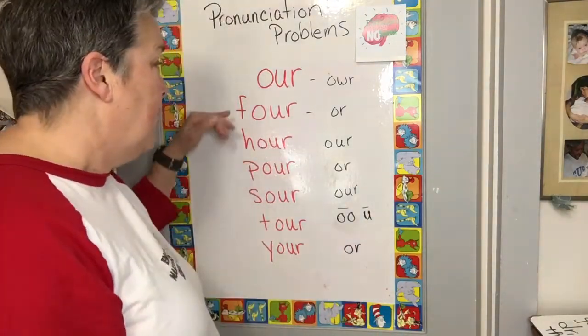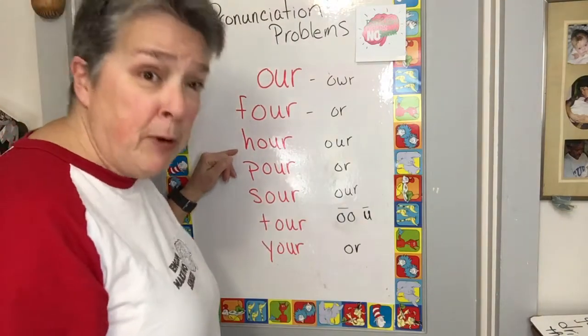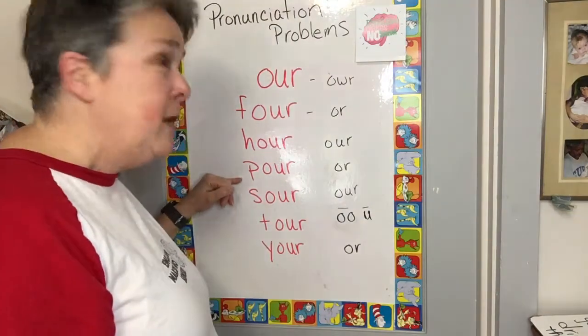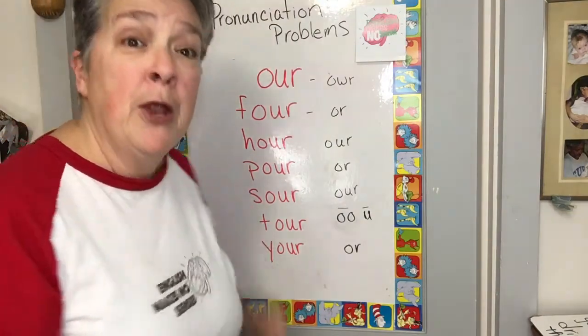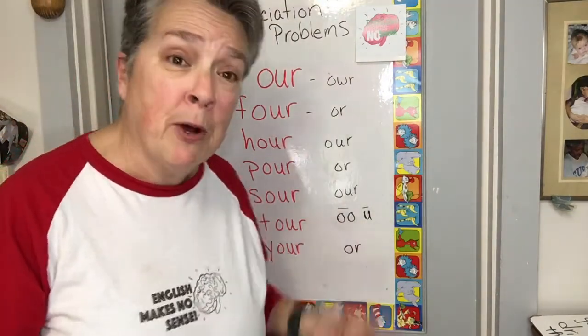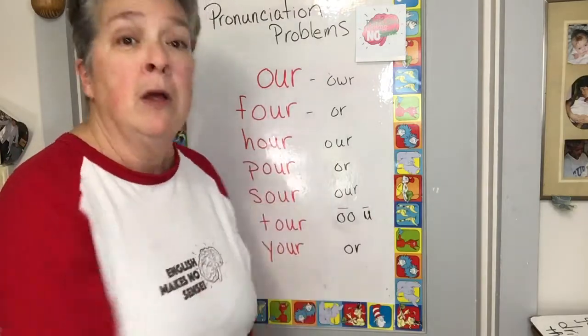So now we got 'for' and 'hour,' perfect. Put a P on, we get... no, now it's 'pour,' rhymes with 'four.' Huh?